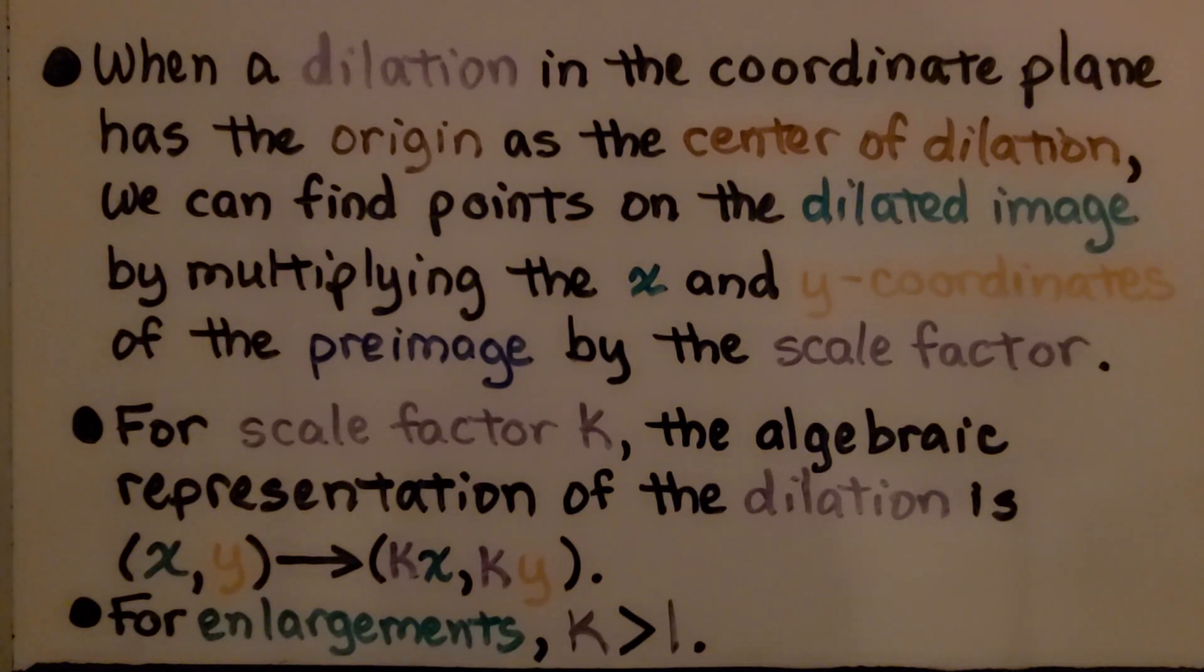When a dilation in the coordinate plane has the origin as the center of dilation, we can find points on the dilated image by multiplying the x and y coordinates of the preimage by the scale factor.